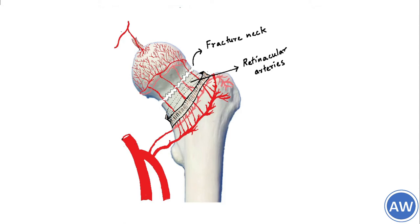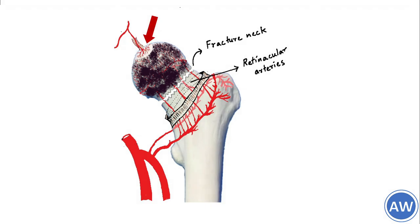The lack of this blood supply causes bone death at the head of the femur. This is the basis of avascular necrosis of the head of the femur. Note that if the foveolar artery remains patent, a small area of the femoral head around the fovea capitis may be spared from avascular necrosis.